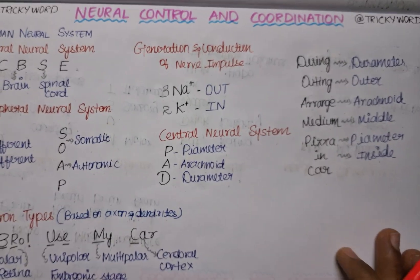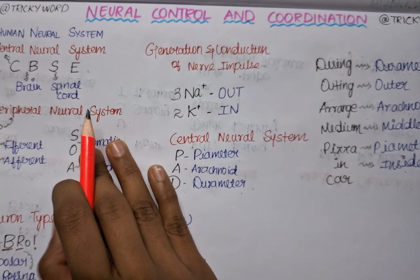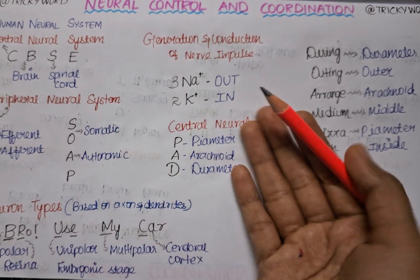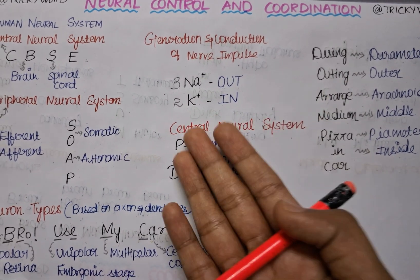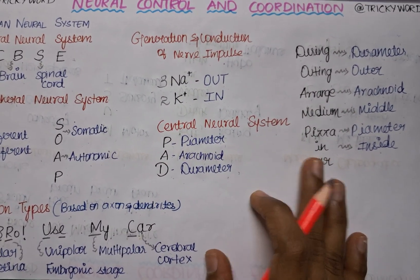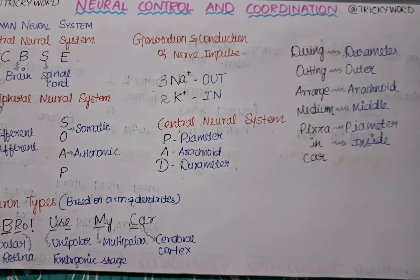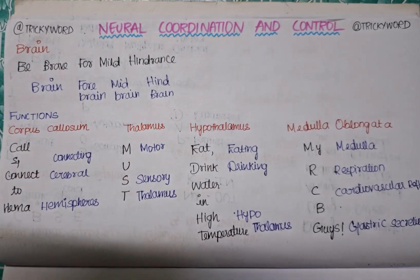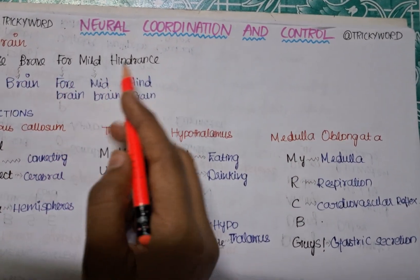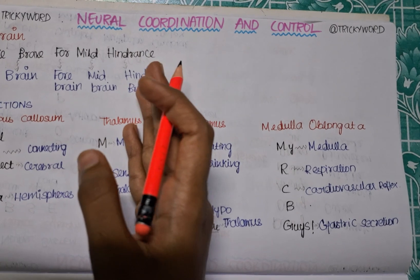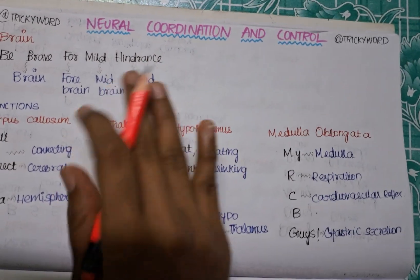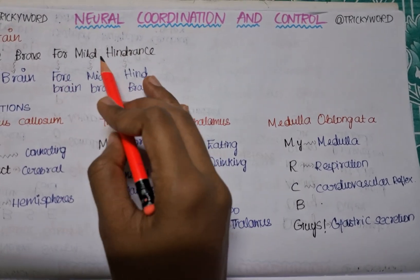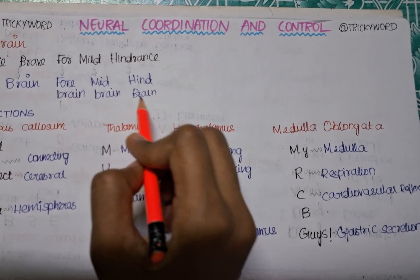So on this page we have covered the human neural system, its central and peripheral divisions with tricks, types of neurons based on axon and dendrite count, the sodium-potassium pump, and the brain coverings. Next, for the parts of the brain, the trick is 'Be brave for mild hindrance' — B for brain, and the parts are: For/forebrain, Mild/midbrain, Hind/hindbrain.